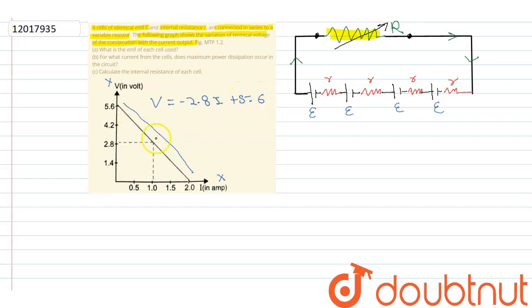This is the equation of this curve, which is the terminal voltage across this resistor. We are given the value of 4E minus 4E upon capital R plus 4 times small r, times capital R.